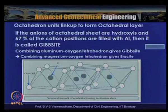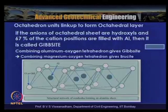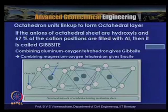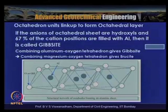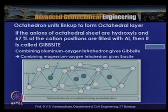When several octahedral units are linked up they form an octahedral layer. If the anions of the octahedral sheet are hydroxyls and 67% of the cation positions are filled with aluminium, it is called gibbsite. Combining aluminium-hydroxyl octahedra gives gibbsite; combining magnesium-hydroxyl octahedra gives brucite.